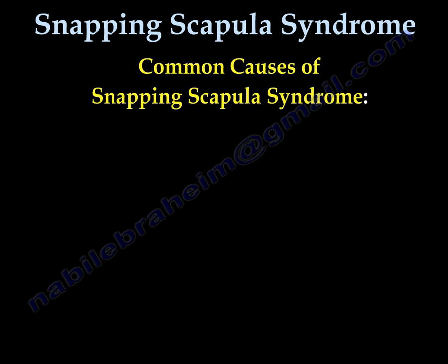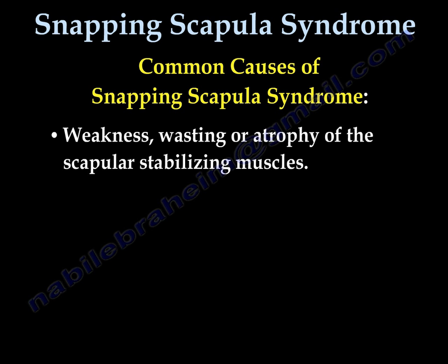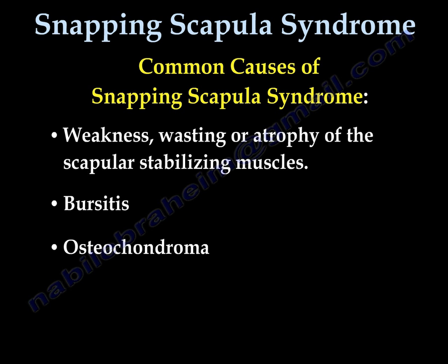What are the common causes of snapping scapula syndrome? Weakness, wasting, and atrophy of the scapular muscles that stabilize the shoulder. Bursitis, osteochondroma, rib or scapular fractures.